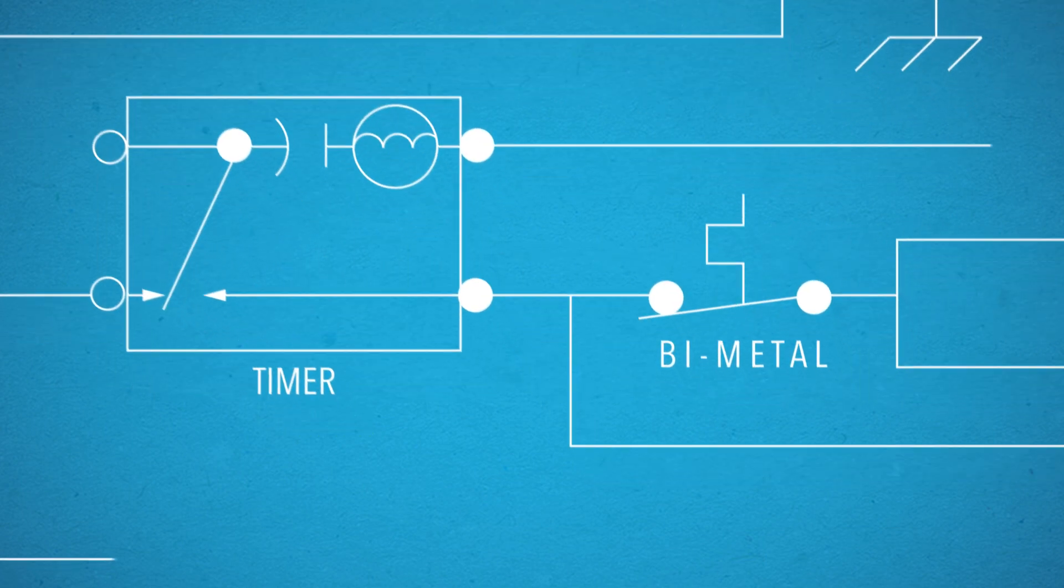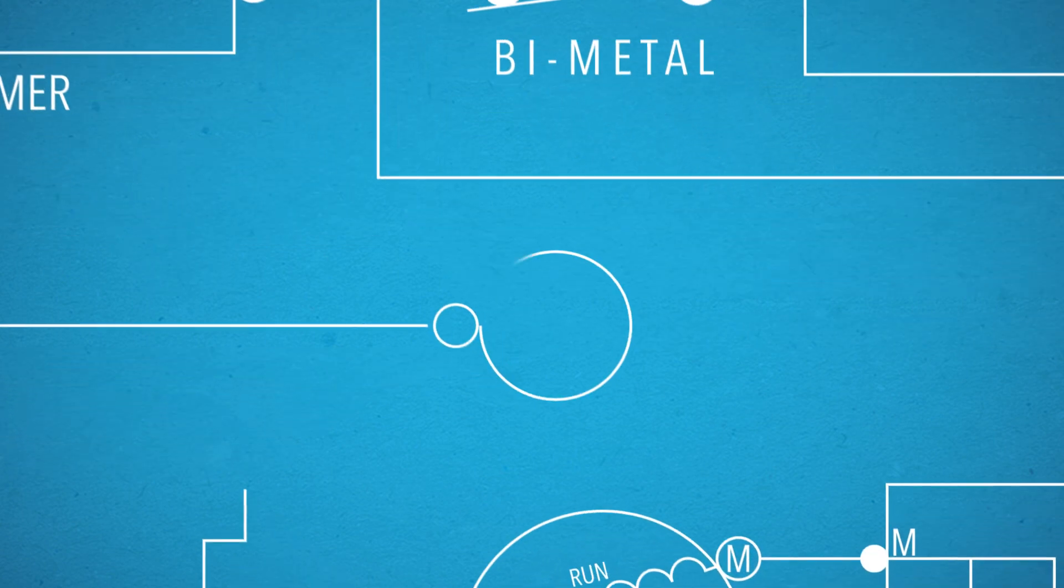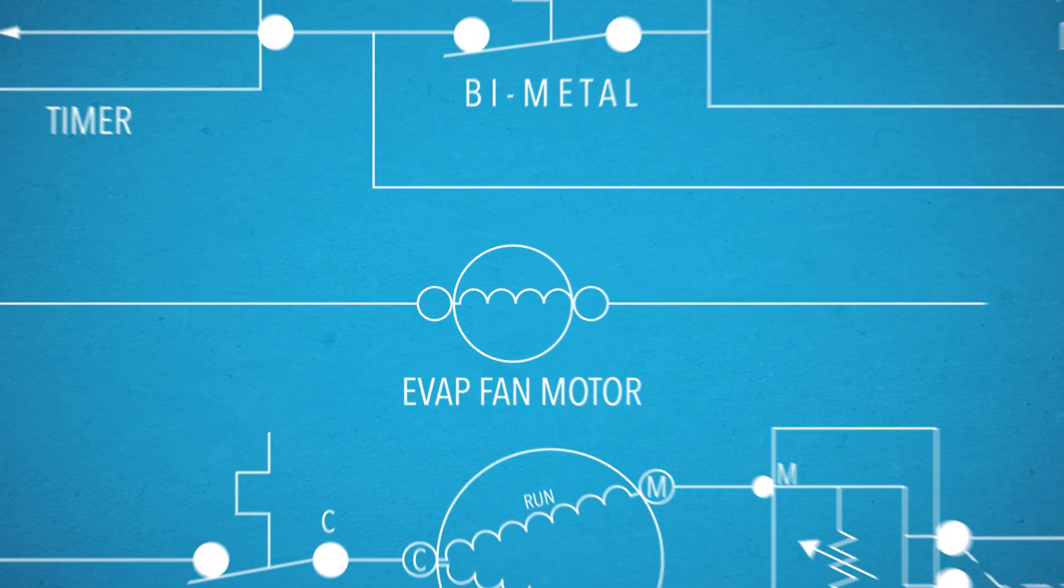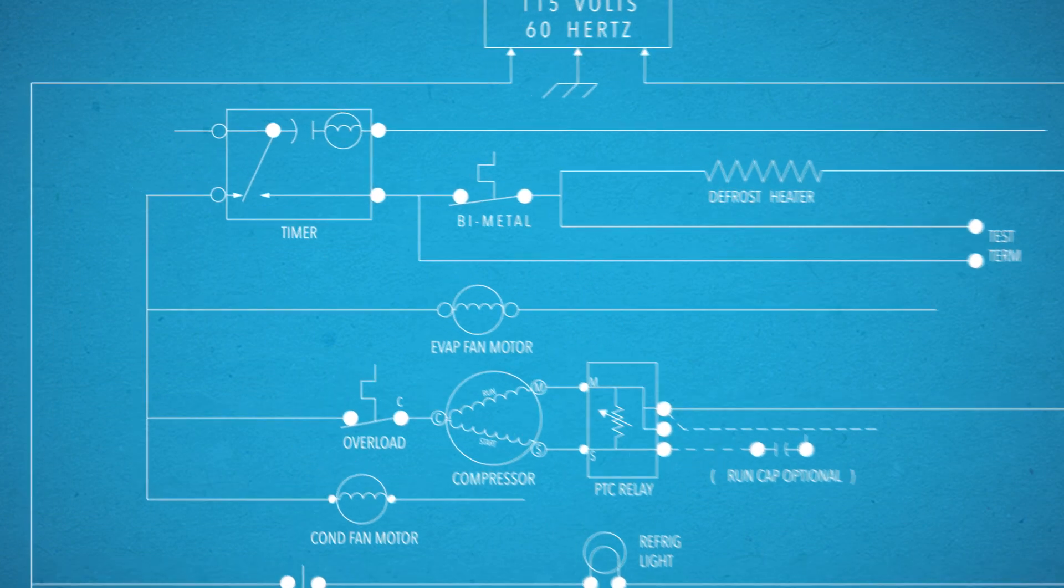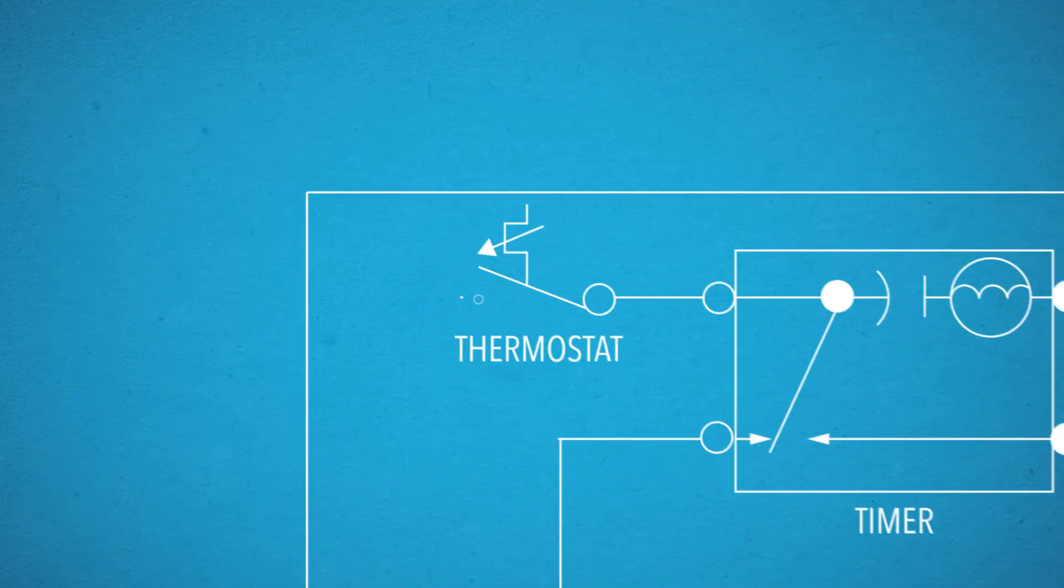You may need to check the evaporator fan motor. Motors look like this. If your refrigerator isn't cooling at all, you'll likely want to hunt down this symbol for the cold control adjustable thermostat.